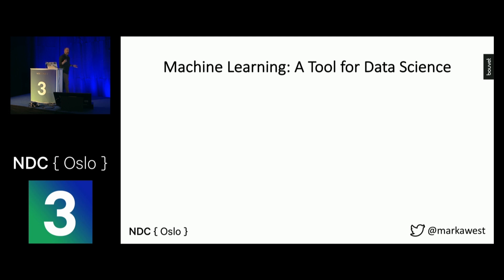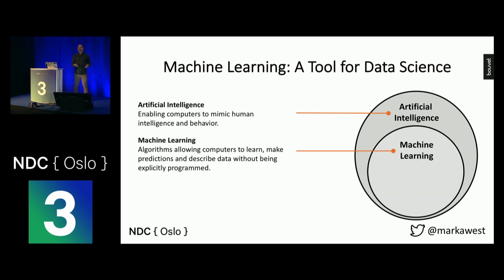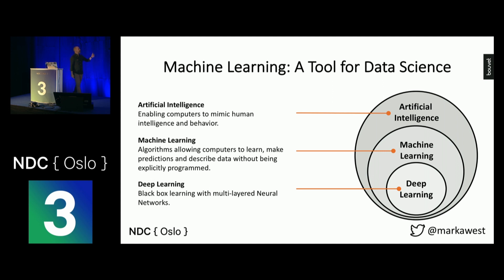When talking about machine learning, there's always talk about AI and deep learning — what do these mean and how do they relate? In my world, AI is just a broad term referring to everything about making computers mimic humans: R2D2, C3PO, HAL 9000. What we're doing today is machine learning — using algorithms to help us predict based on historical data and describe new data. Deep learning is a part of machine learning; it's about building neural networks with more than one hidden layer. Neural networks have an input layer, an output layer, and a hidden layer in the middle. Deep learning is an advanced topic, so I'll be focusing on more general machine learning today.